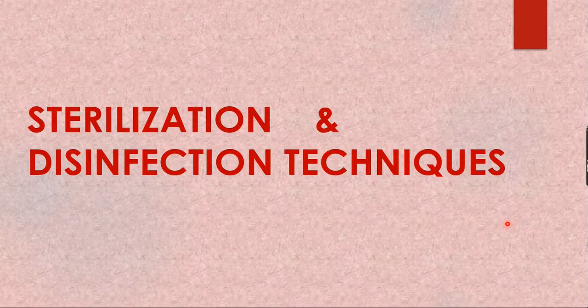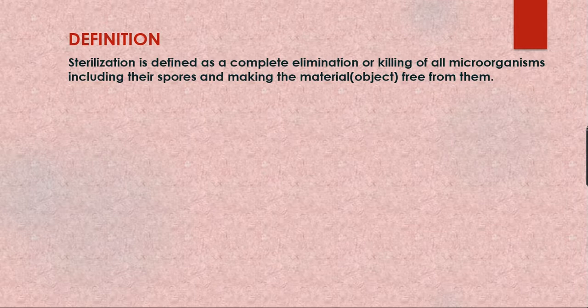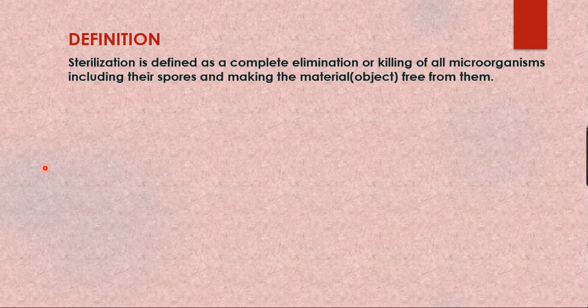In Part 1 of sterilization we learned about dry heat physical sterilization. In this part we are going to discuss moist heat sterilization. As a quick review, sterilization is defined as the complete elimination or killing of all microorganisms including spores, making the material free from them. Sterilization is classified into two types.